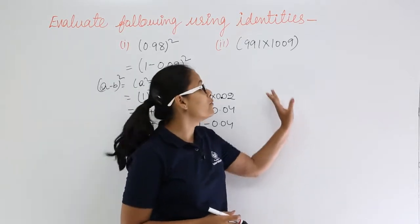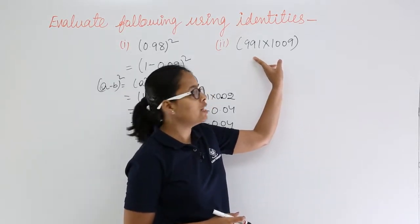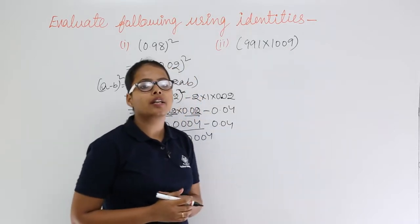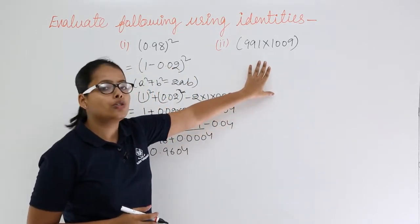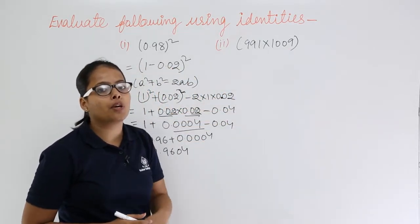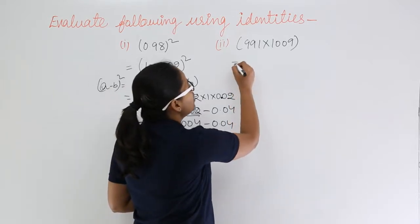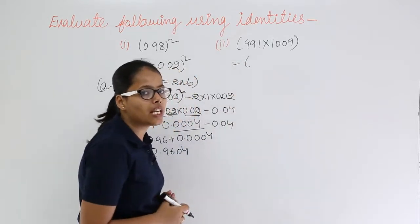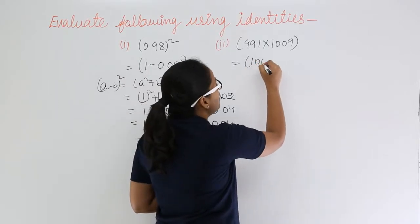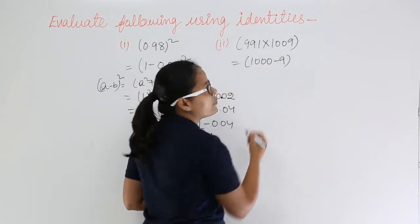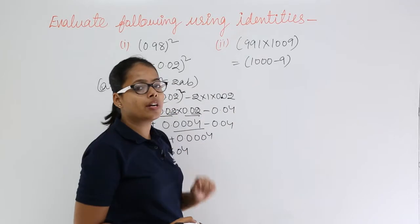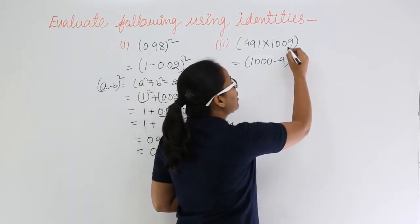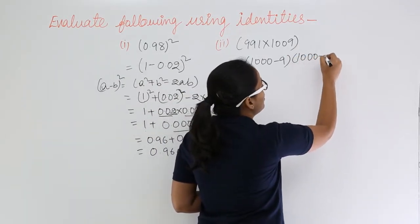Now move on to second problem which is multiplication of 991 into 1009. Now to apply the identity here what you are going to do? Let's change the value of this just to make the multiplication easy. You can write this as 1000 minus 9, this will give you 991, and you can write this as 1000 plus 9.